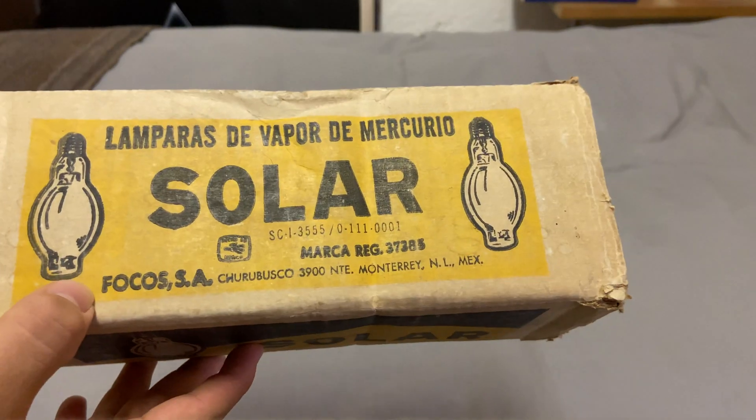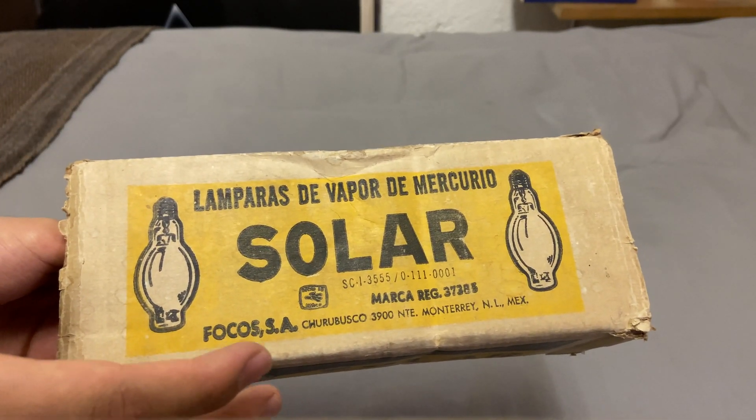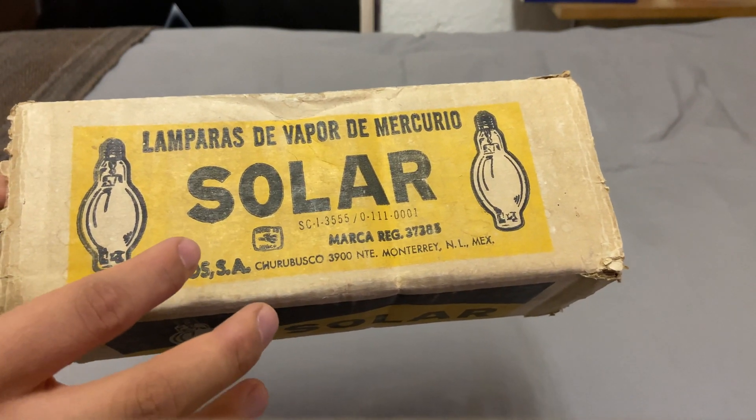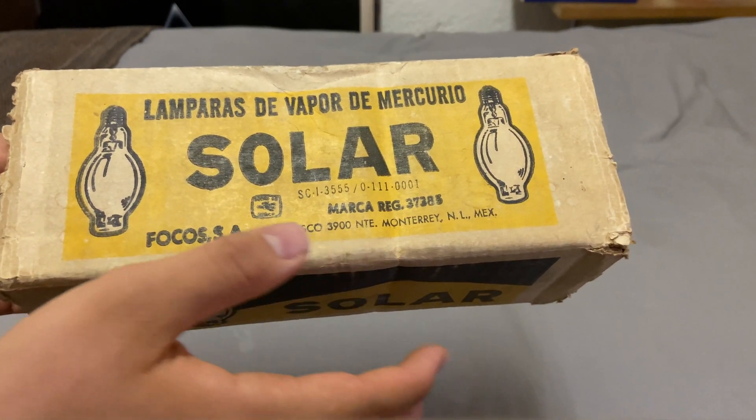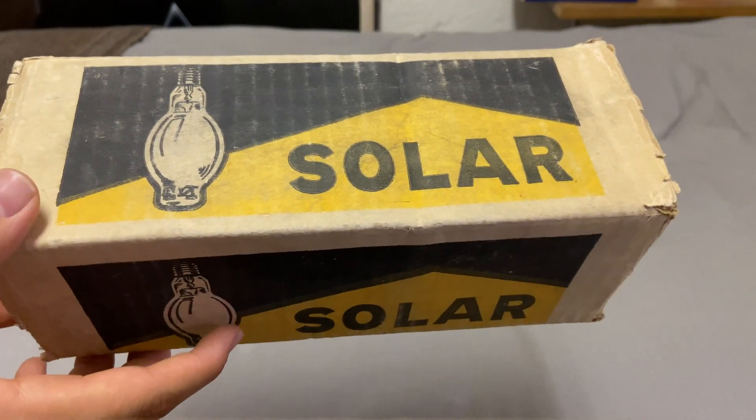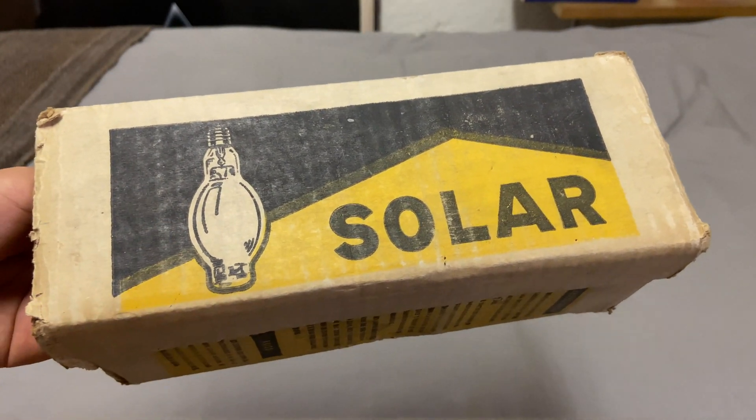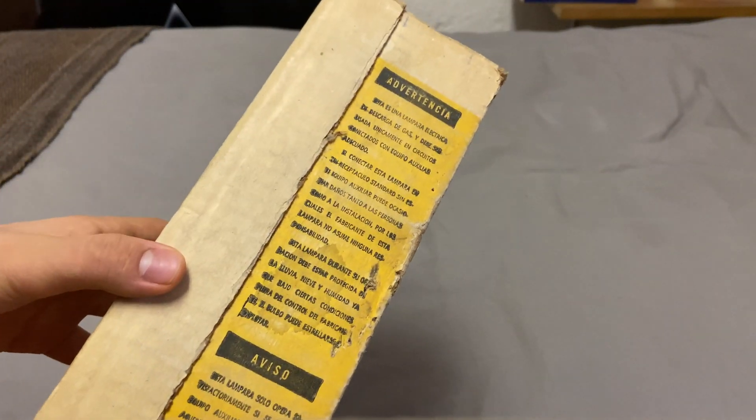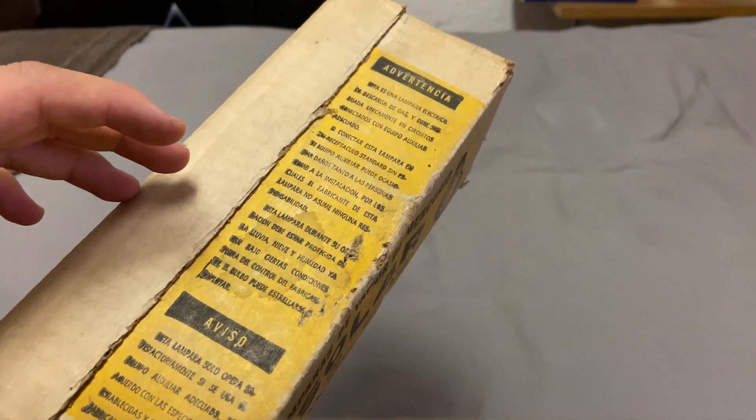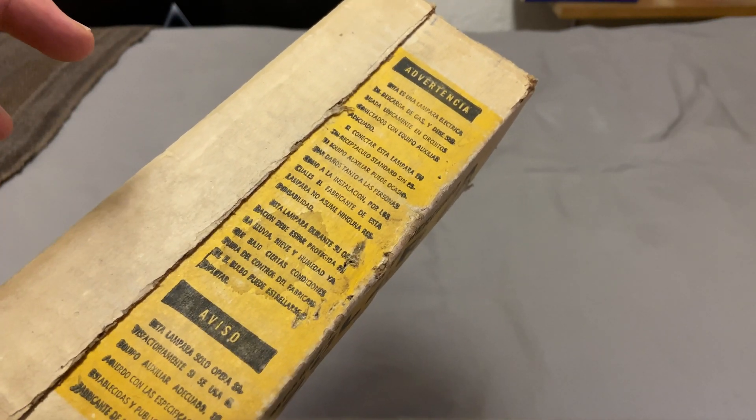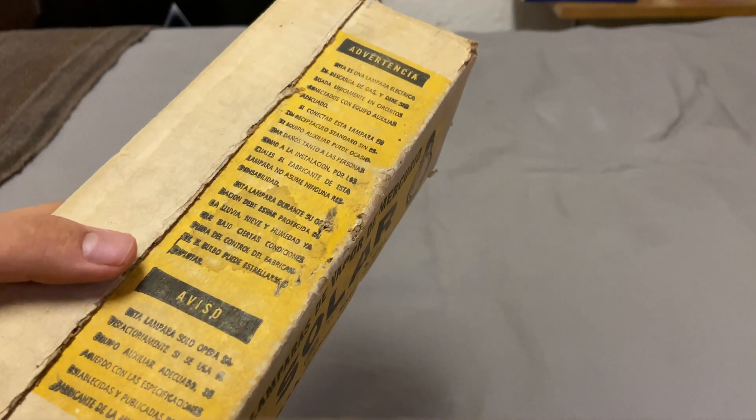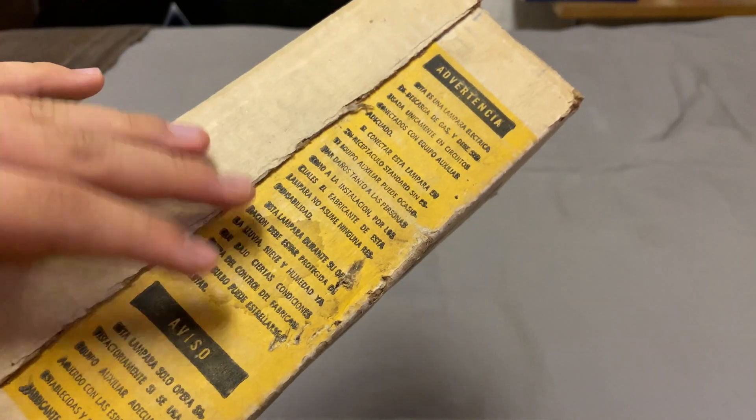Okay, first we take a look at the actual box. And here we have this 1980s style presentation. Here it says Mercury Vapor lamp and Solar made in Mexico in Churubusco, Monterrey, Nuevo León. I like this 1980s aspect of the box. And here we have the usual warnings when it comes to operating a HID bulb without the outer bulb and all the things that we always read in HID bulb packaging. I will translate it in the description below because here it's written in Spanish.